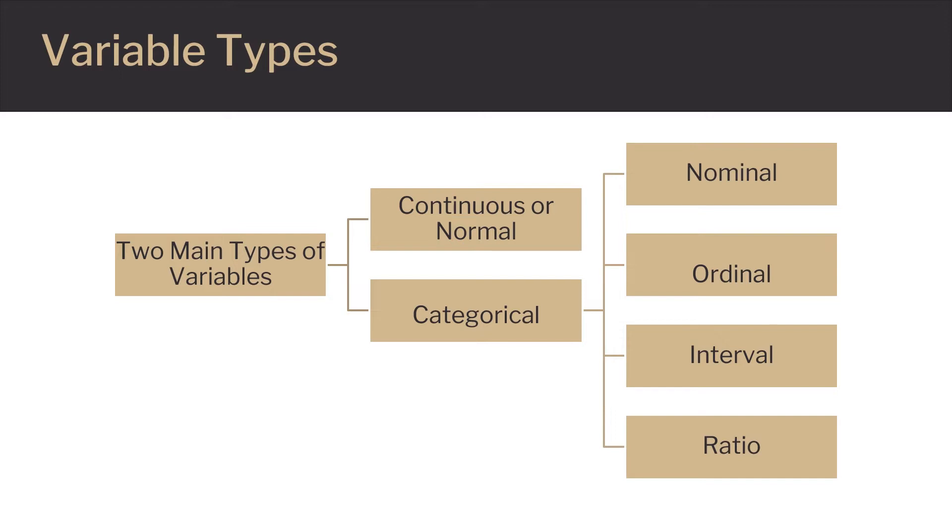Ordinal data is categorical in nature but goes in order. For example, the categories small, medium, and large have a clear order in terms of their size.